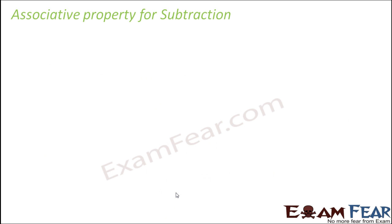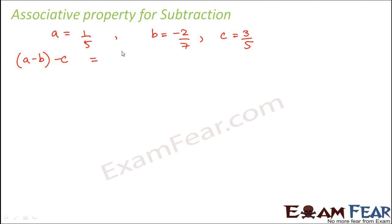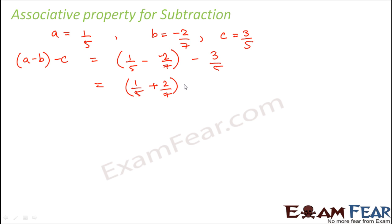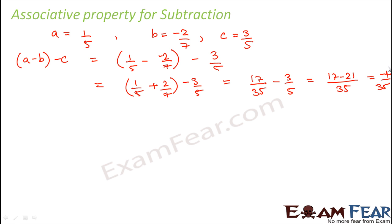For the associative property of subtraction, we use the same three rational numbers: a = 1/5, b = -2/7, c = 3/5. We first calculate a minus (b minus c), which is 1/5 minus (-2/7 minus 3/5). Minus minus gives plus, so this becomes 1/5 plus 2/7 minus 3/5, which is 17/35 minus 3/5, giving (17 minus 21) over 35, equal to minus 4/35.